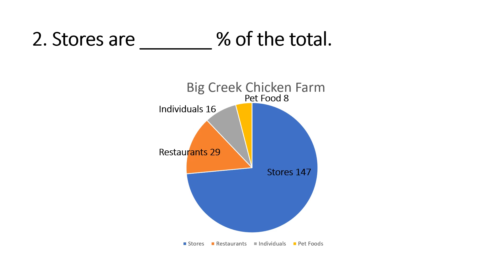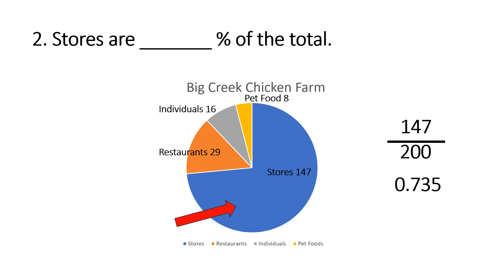The way we do this is we take the store clients, which is 147, and we divide it by 200 — the total number of clients. The answer, if you type it on your calculator, will be 0.735.